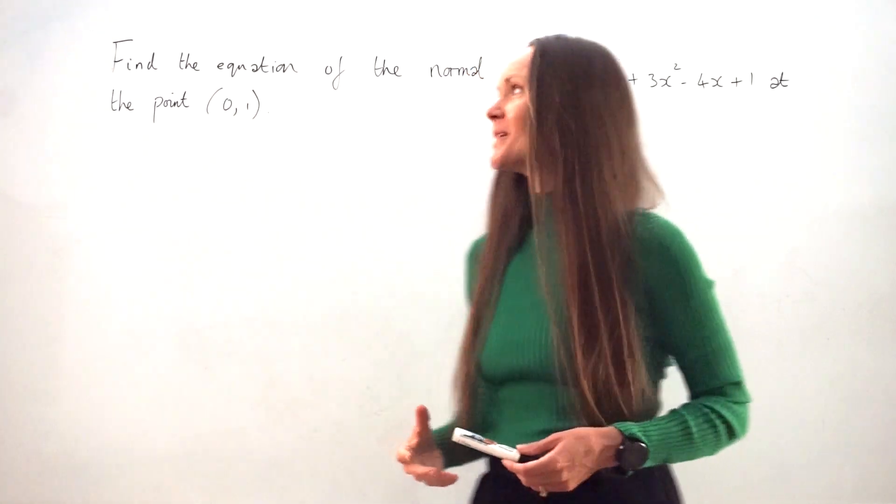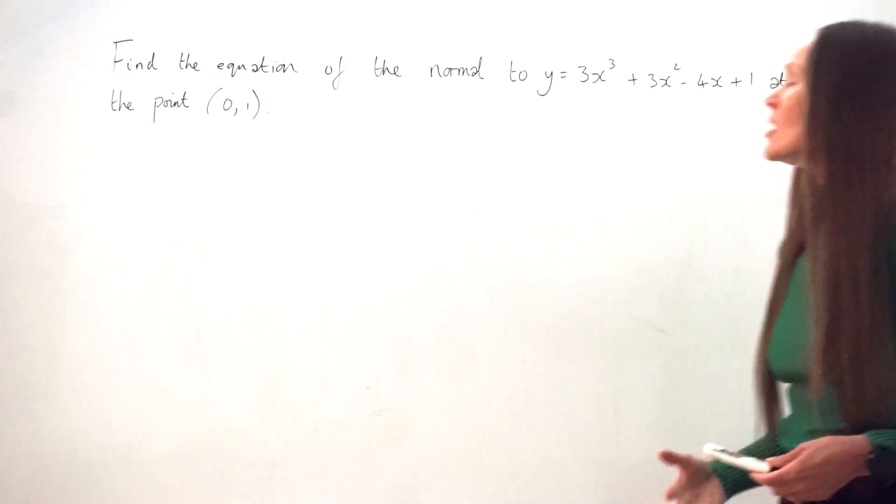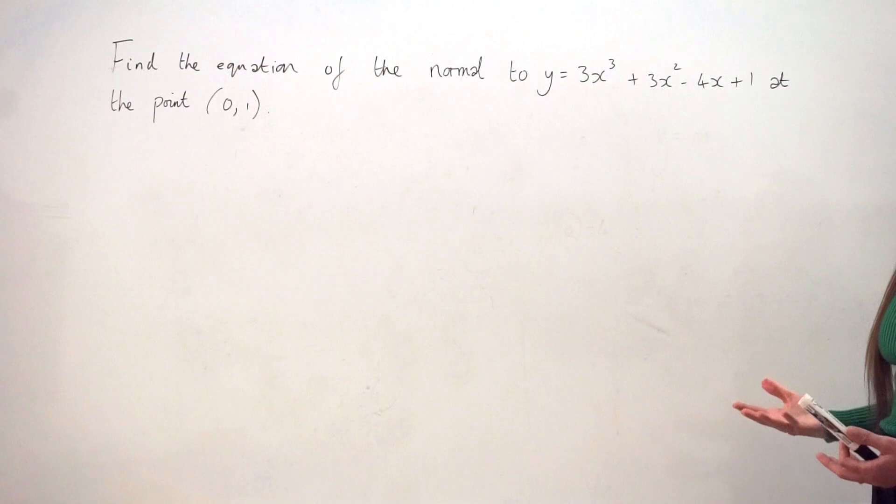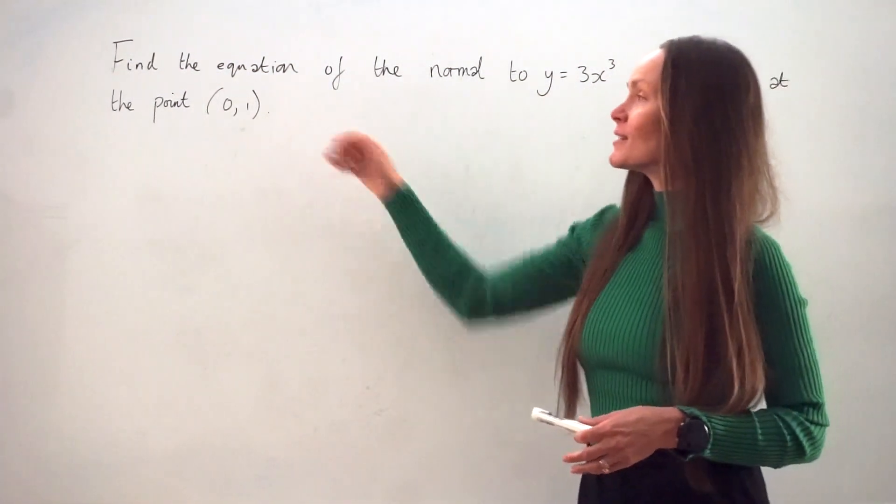Hey guys, in this question we need to find the equation of the normal to y = 3x³ + 3x² - 4x + 1 at the point (0,1).